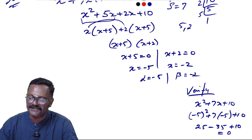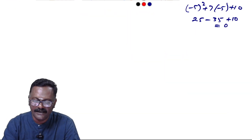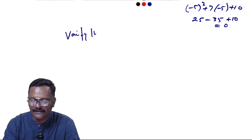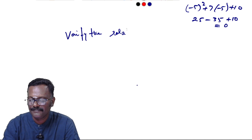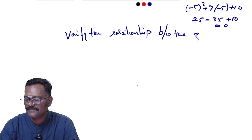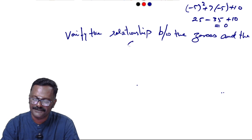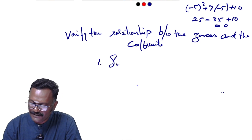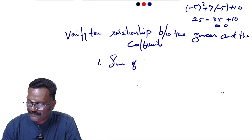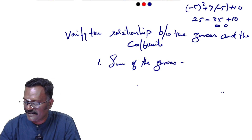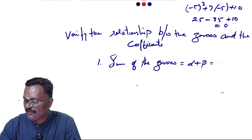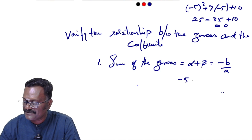Now let's verify the relationship between the zeros and the coefficients. First, the sum of the zeros: alpha plus beta equals minus b by a. So (-5) + (-2) equals -b/a.